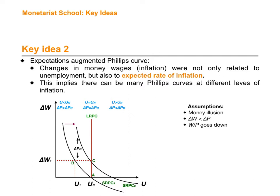In the very short term we moved from point A to point B, but then we move to point C, and we end up with an almost vertical long-term Phillips curve. Looking at this graph, in the upper region to the left of the long-term Phillips curve, unemployment is lower than the natural rate of unemployment — Un is the natural rate of unemployment.